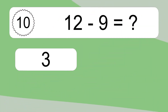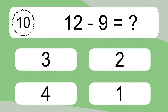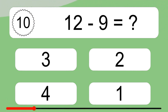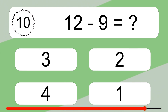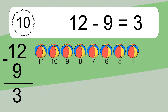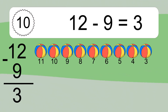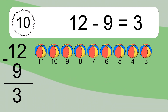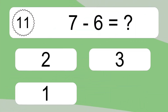12 minus 9 equals what? 12 minus 9 equals 3. Let's count it. 11, 10, 9, 8, 7, 6, 5, 4, 3. 7 minus 6 equals what?